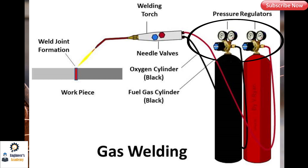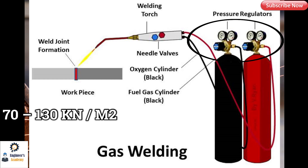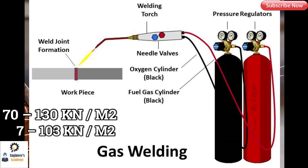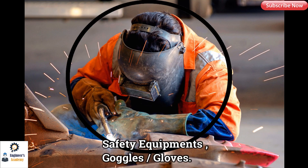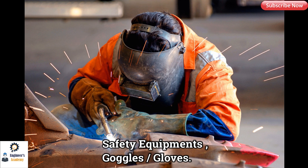Moving ahead is the pressure regulator. Both oxygen and fuel gases are filled in cylinders at high pressure, and these gases cannot be used at this high pressure for welding work. So a pressure regulator is used — it supplies oxygen at a pressure of about 70 to 130 kilo-newton per meter square, and gas at 7 to 103 kilo-newton per meter square, to the welding torch. Safety equipment such as goggles and gloves are used to protect the eyes and hands from radiation and flame.